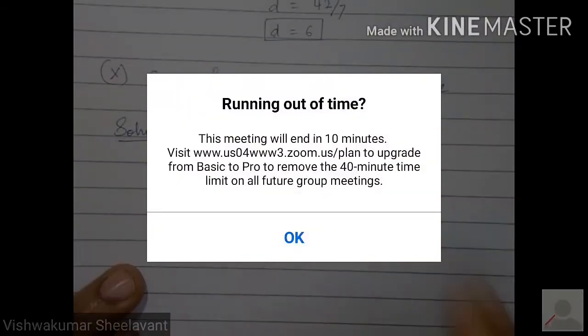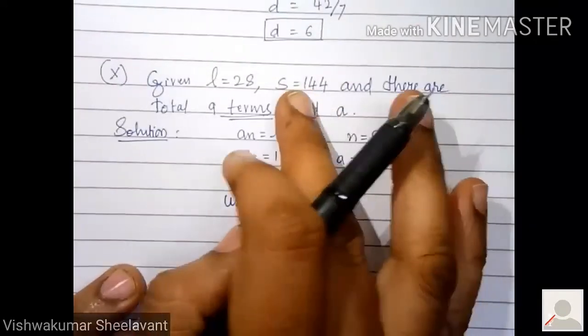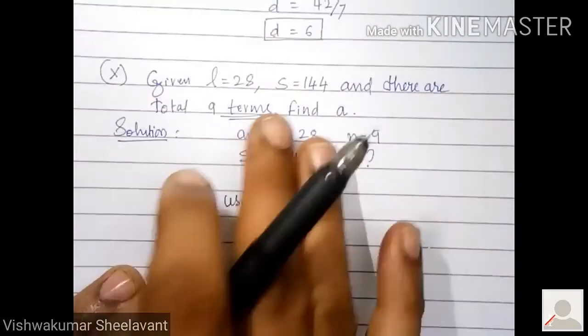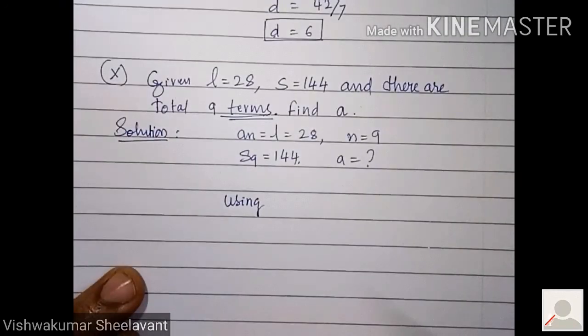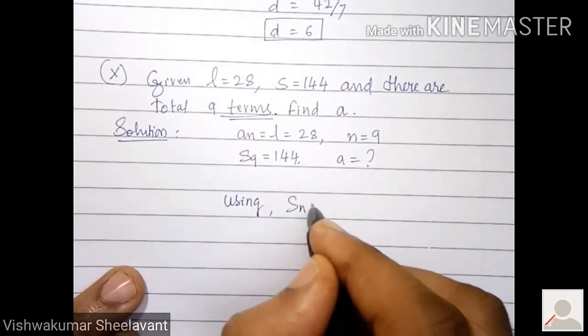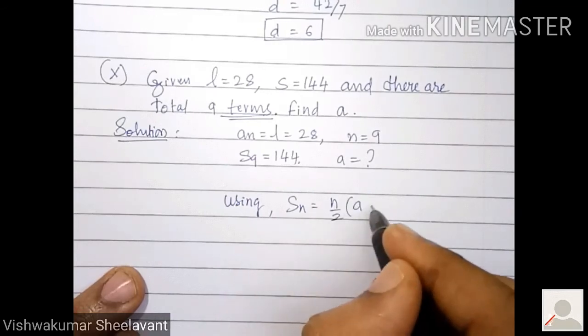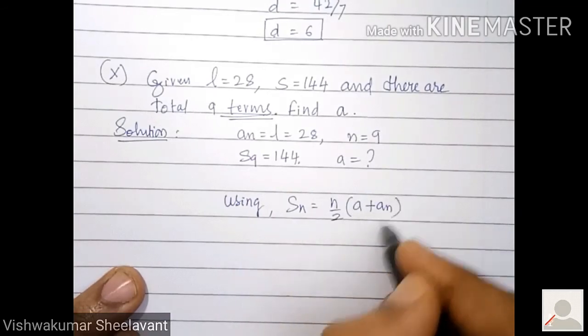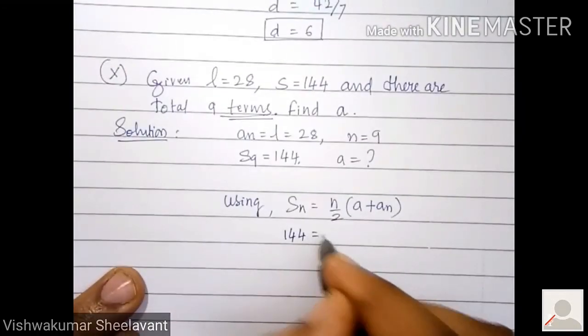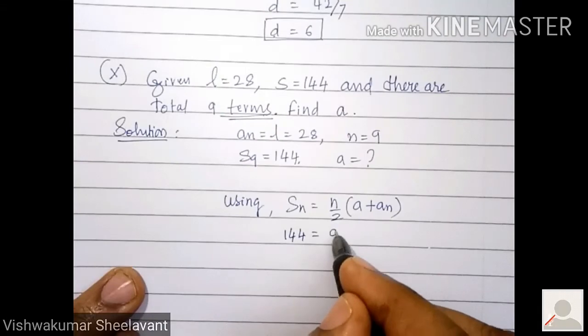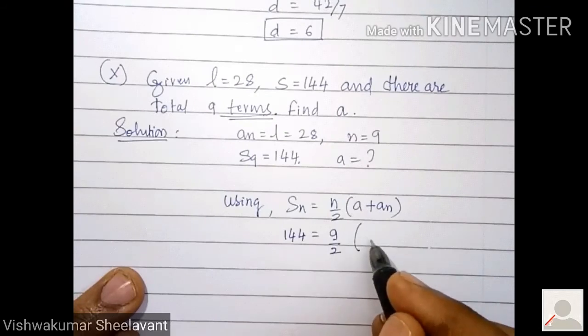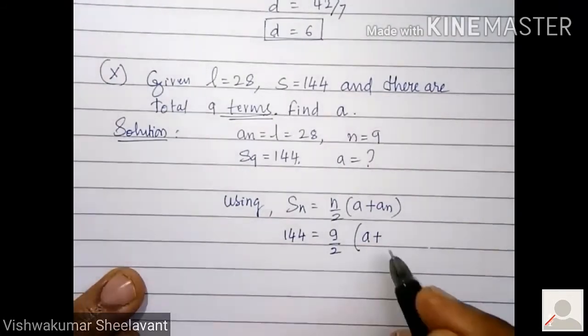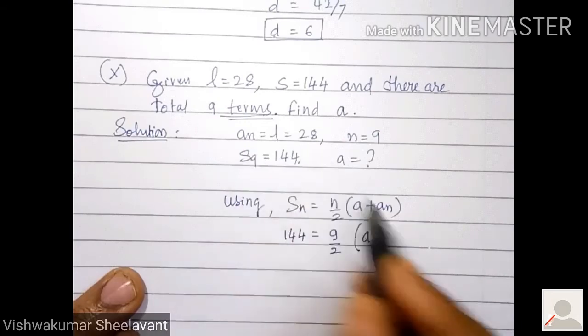About d they have not mentioned, neither they have given nor they have calculated nor they have asked us to calculate. We have to make use of S_n equals n by 2 into a plus a_n formula. Using S_n equals n by 2 into a plus a_n. S_n is 144, n is 9, so 9 by 2. a we have to calculate, keep it as it is. Last term or a_n is 28, write it as it is.